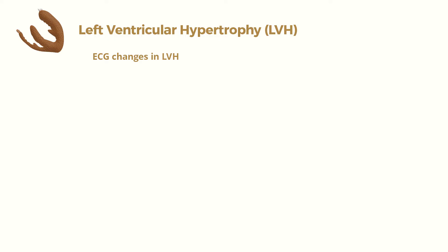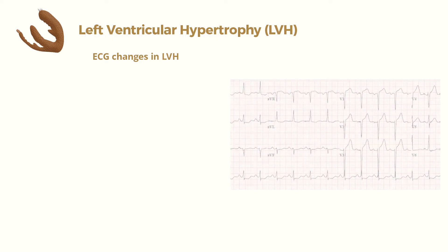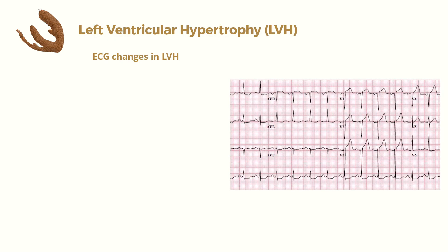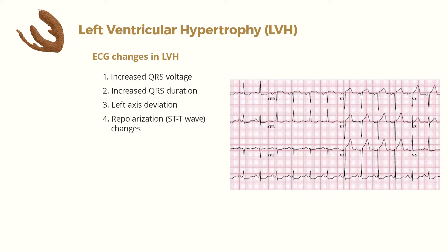LVH and related changes can produce five major electrocardiographic findings. These are: increased QRS voltage, increased duration of QRS complex, left axis deviation, repolarization RST and T wave changes, and fifth is left atrial abnormality.